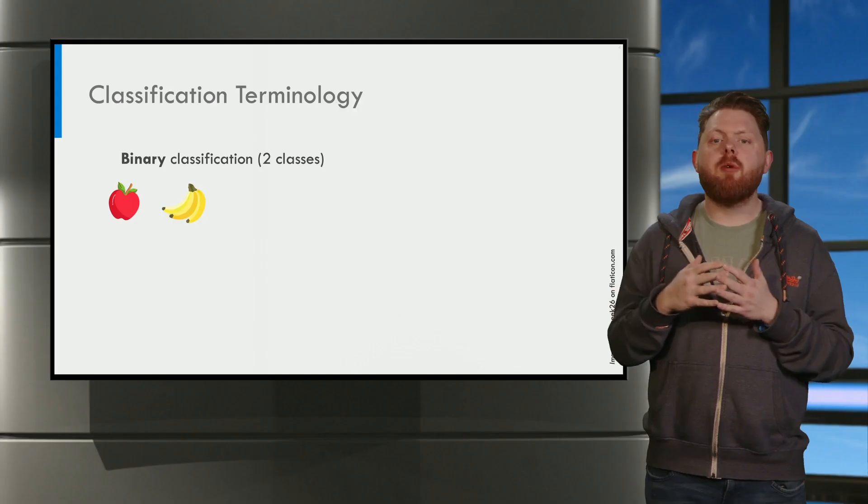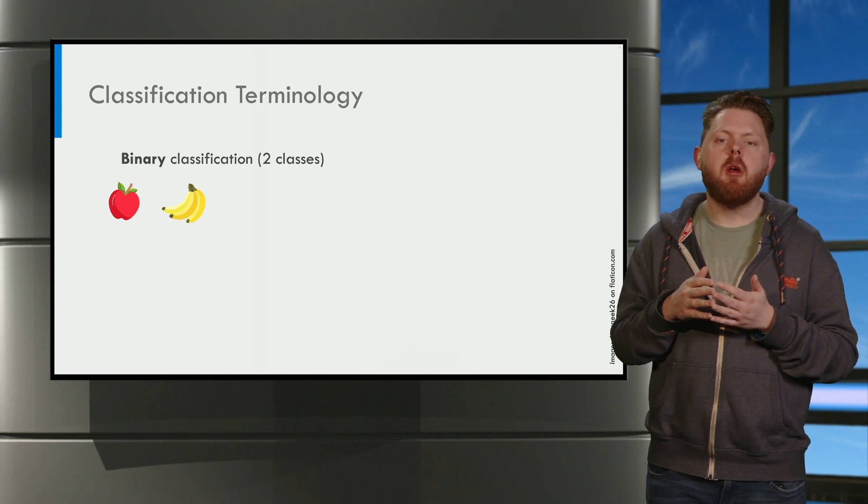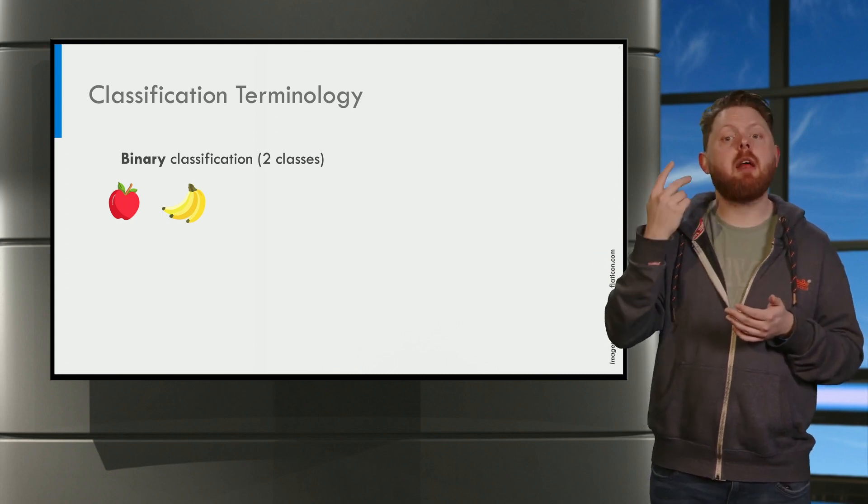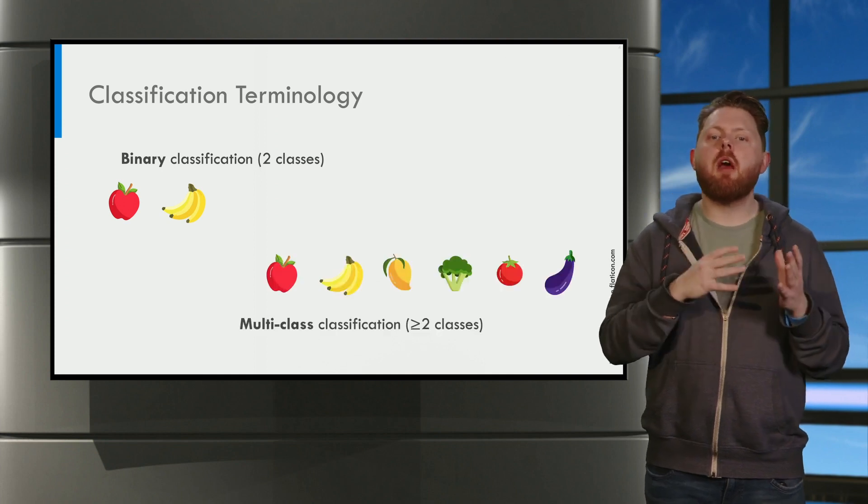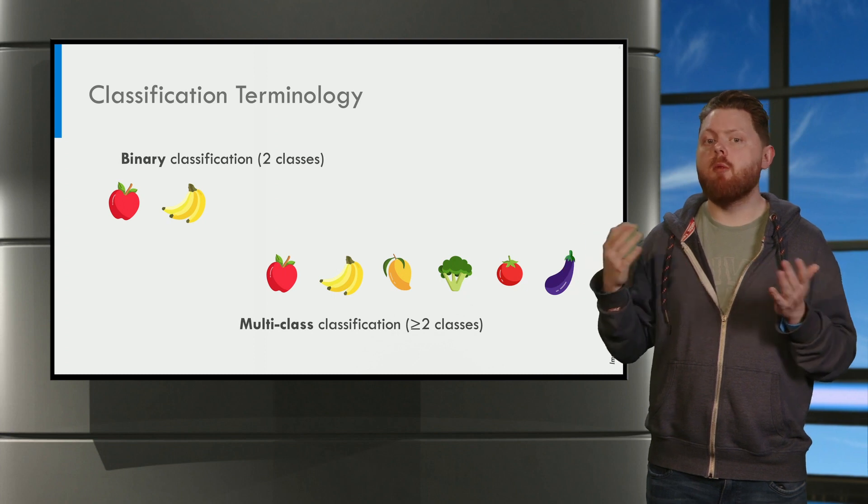Our previous example was a so-called binary classification problem. Meaning we have two classes, apple and banana. In a multi-class classification problem, we can have many more classes.